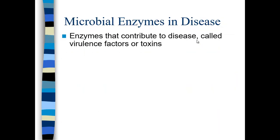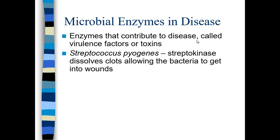There are many enzymes involved in disease states — this is the flip side of metabolism. When these enzymes cause disease to be worse, we call them virulence factors or sometimes toxins. Streptococcus pyogenes, a causative agent of strep throat, produces an enzyme called streptokinase, which will dissolve blood clots. That allows bacteria to get into wounds and become systemic and get into the bloodstream.